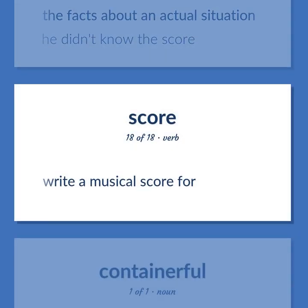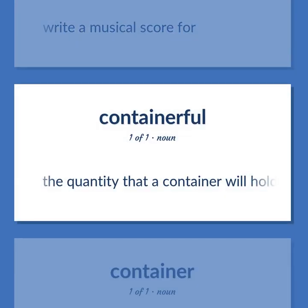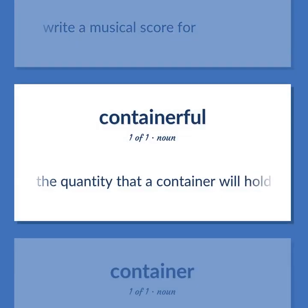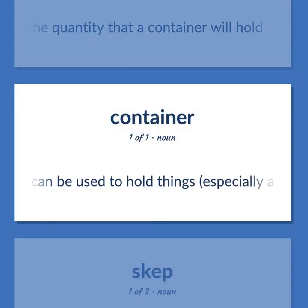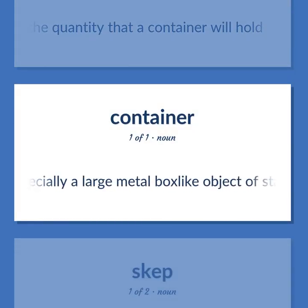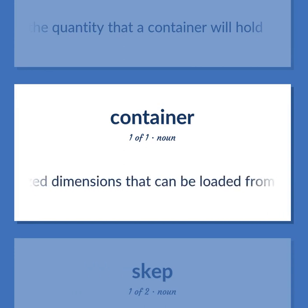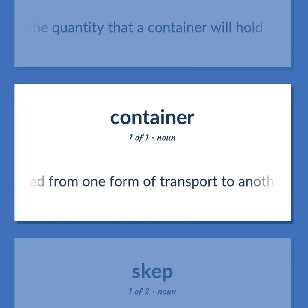Score: to write a musical score for. Container: the quantity that a container will hold. Any object that can be used to hold things, especially a large metal box-like object of standardized dimensions that can be loaded from one form of transport to another.